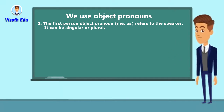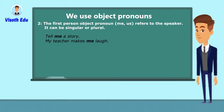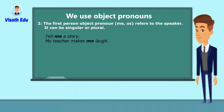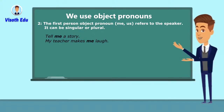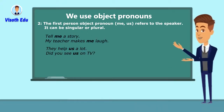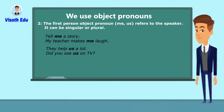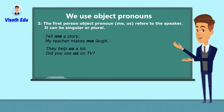The first person object pronouns are 'me' and 'us' — they refer to the speaker and can be singular or plural. For example: 'Tell me a story,' 'My teacher makes me laugh' — 'me' is the first person singular objective pronoun. 'They help us a lot,' 'Did you see us on TV?' — 'us' is the first person plural objective pronoun.